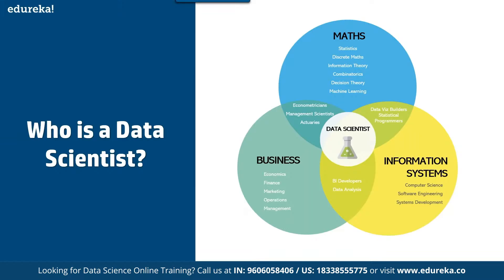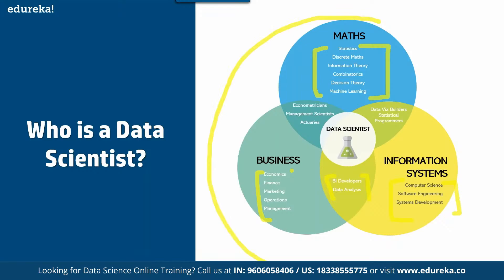Who is the data scientist? Data scientists are responsible for designing and creating processes and layouts for complex, large-scale data sets used for modeling, data mining, and research purposes. They combine various technical and non-technical skills — technically things like mathematics, statistics, discrete mathematics, information theory — on which you can write algorithms and create patterns. You also work with information systems, computer science, software engineering, and on the business side, economics and finance for visualization. The combination of all three basically forms data science.